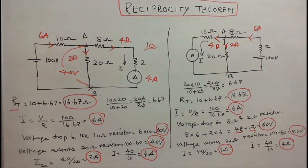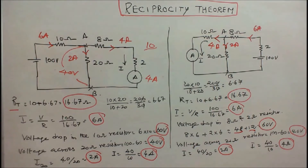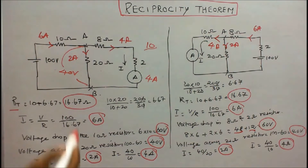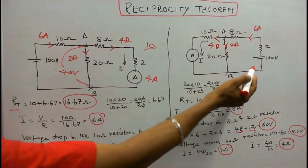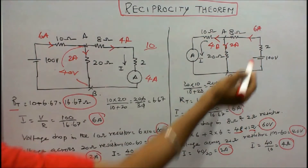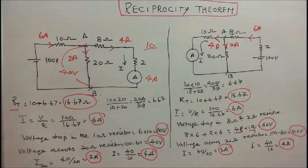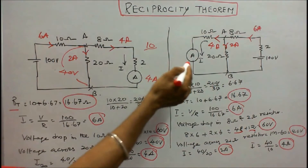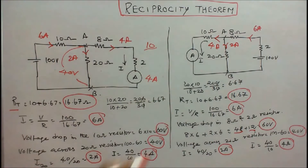Kirchhoff's current law is verified. According to the Reciprocity Theorem, I interchange the ammeter and the voltage source: I connect the voltage source in series with the 2 ohm resistor, and I connect the ammeter in series with the 10 ohm resistor.